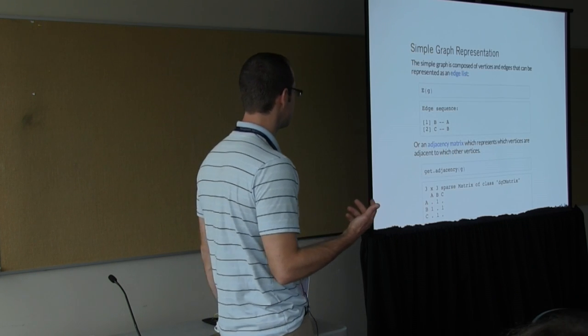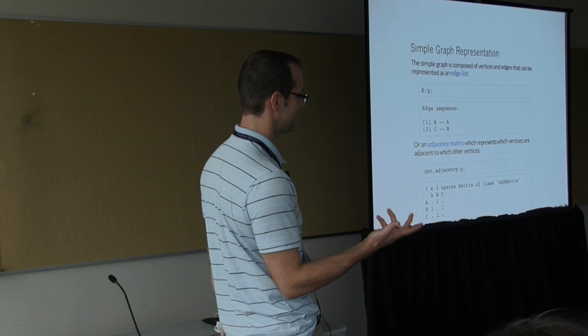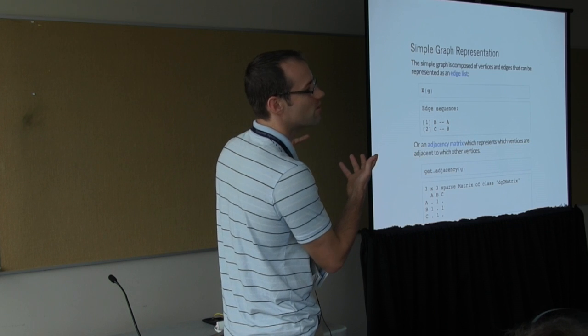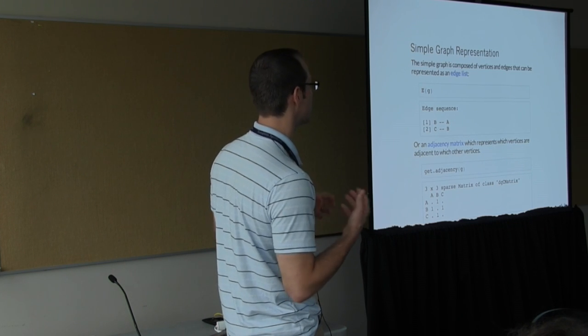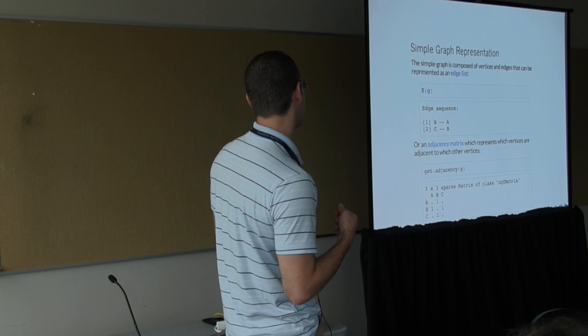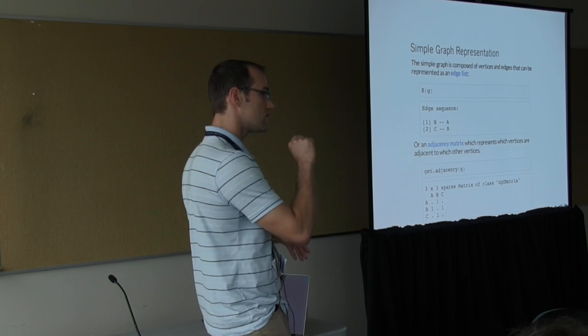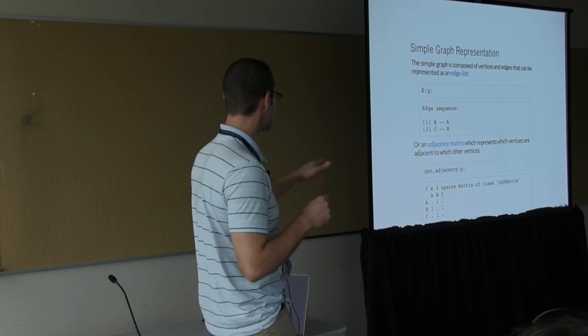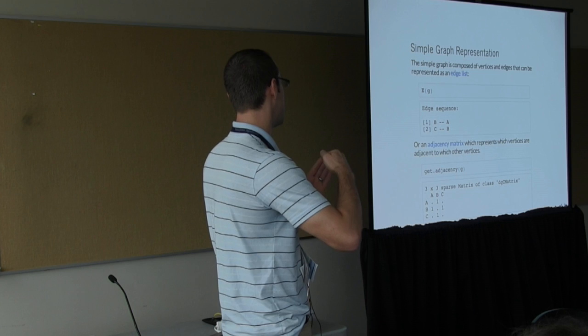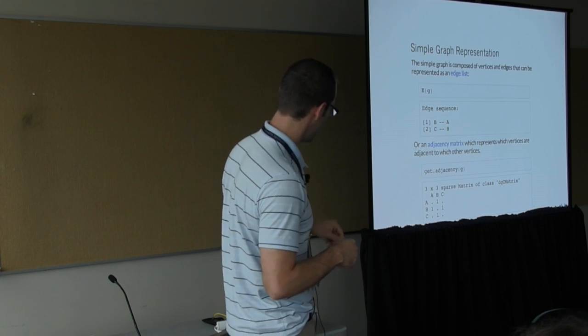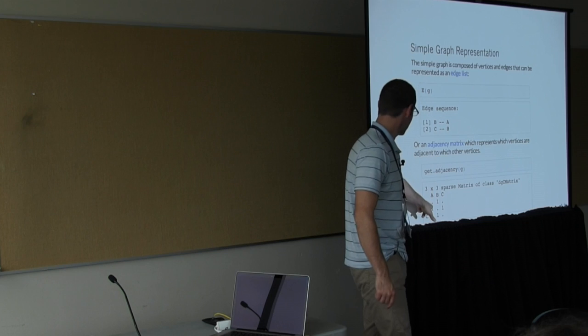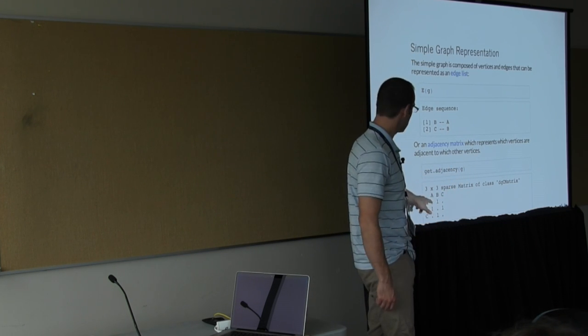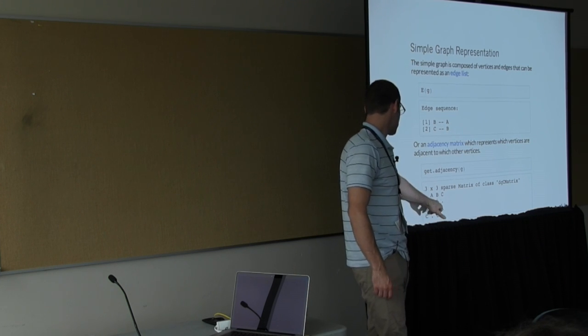There are lots of different ways to represent the underlying data for these graphs. There's the graphic representation. But that can only get you so far. At base, you can represent these as edge sequences. You can represent them as adjacency matrices. They're going to always be an n-by-n matrix where the connections are either one or null, sometimes zero.